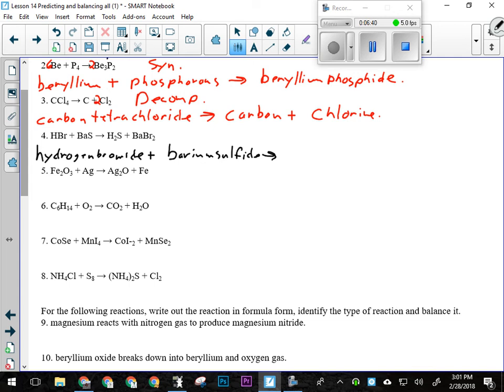And that's going to produce hydrogen sulfide, ionic compound, and barium bromide. All right. Since they're all ionic, that's a double replacement reaction.